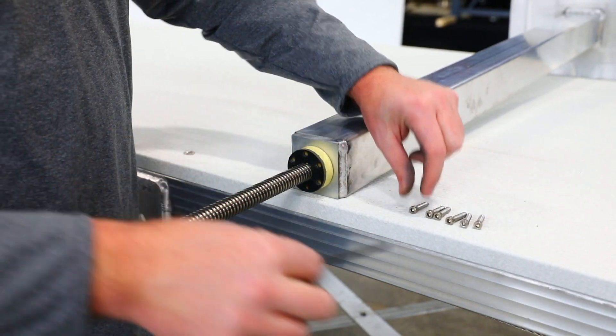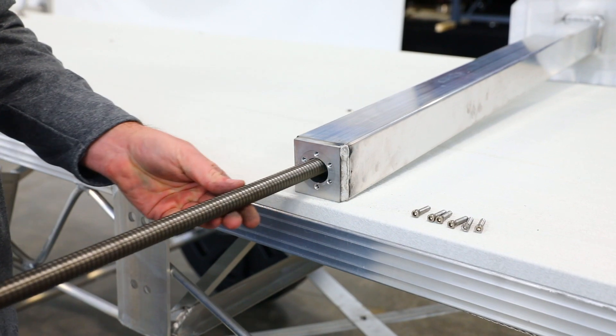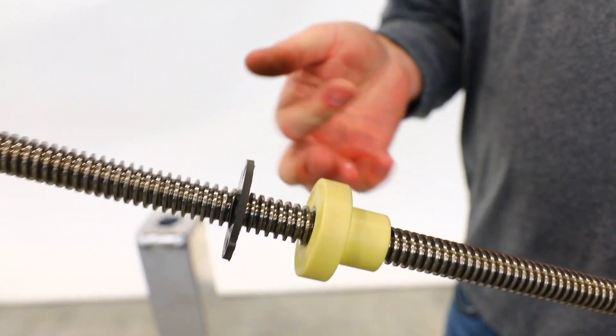With all six screws removed the threaded shaft can now be removed from the housing. With the screw leg fully disassembled you can now perform maintenance.